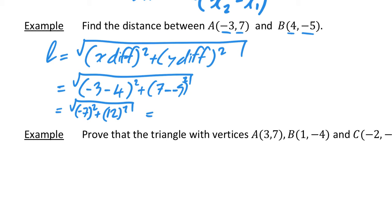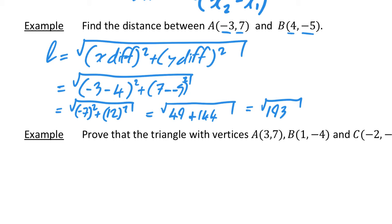We can just do that on our calculator. -7 squared is 49 and 12 squared is 144, so adding those gives the square root of 193, which equals approximately 13.9 units to one decimal place.